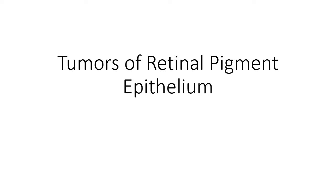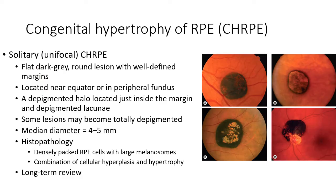Hello guys, this is Indian Medical and in this video we are going to discuss about tumors of the retinal pigment epithelium. First let us discuss about congenital hypertrophy of the retinal pigment epithelium, abbreviated as CHRPE. There are three types of CHRPE: solitary or unifocal CHRPE, multifocal CHRPE, and atypical CHRPE.